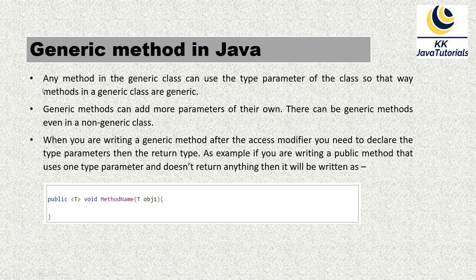When you write a generic method inside a generic class, the method can use the class's type parameter and also declare additional type parameters of its own. Third key point: when writing a generic method, after the access modifier you must declare the type parameters before the return type. For example: public <E> void printElements(E[] elements) — first access modifier, then type parameter in angle brackets, then return type, method name, and parameters.